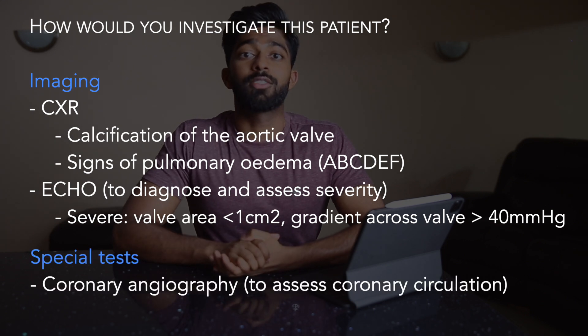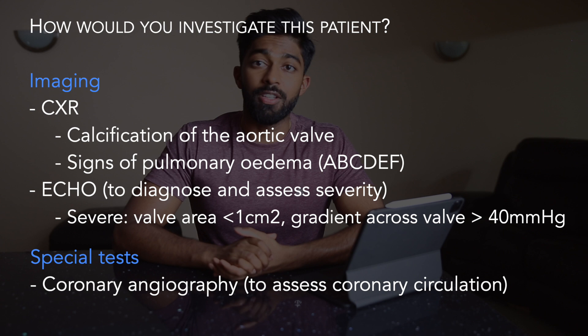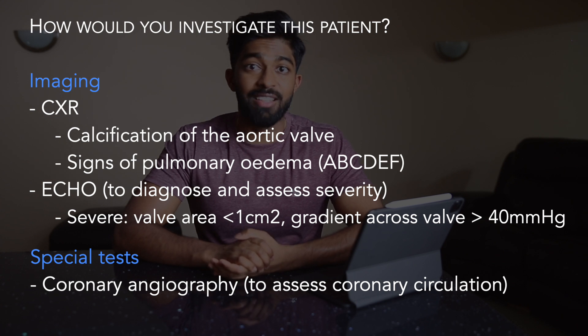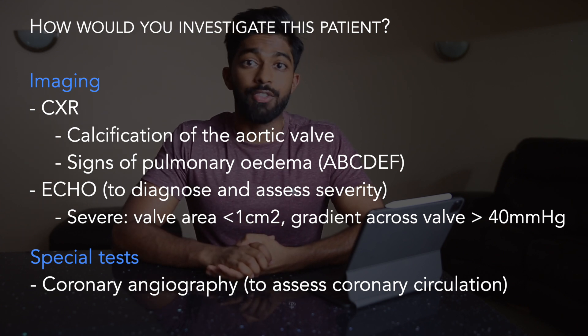Finally, for special tests I'd like to do coronary angiography to assess the coronary circulation, as someone with aortic stenosis is likely to also have some element of coronary artery disease. You definitely don't have to mention all of those tests — it's more important to classify them and, if you do mention a test, explain why it's relevant to your diagnosis.